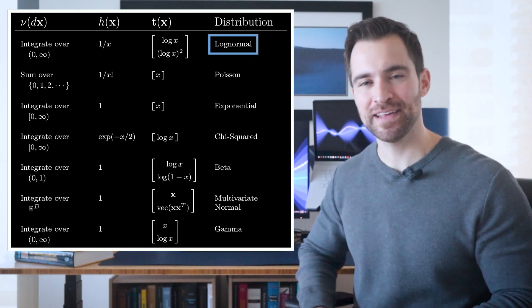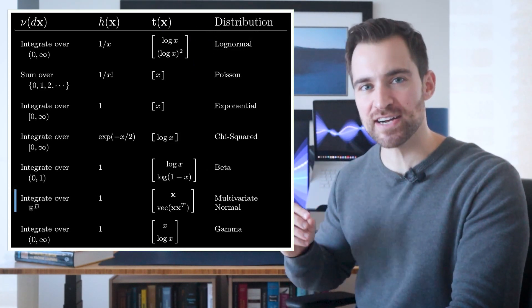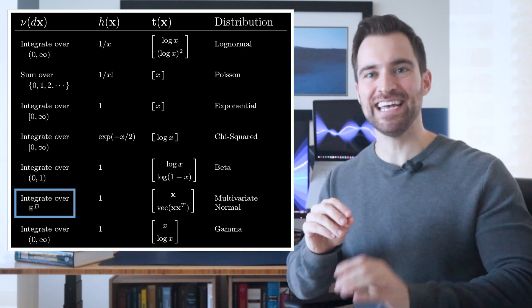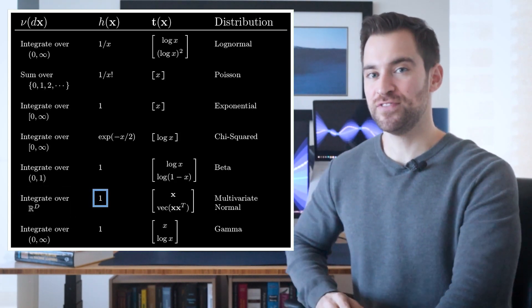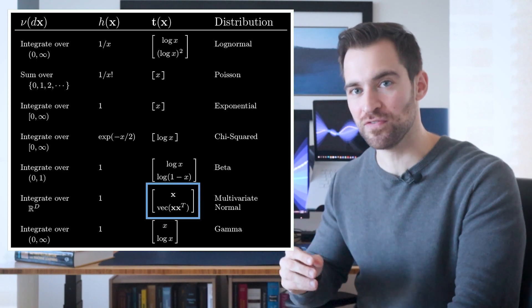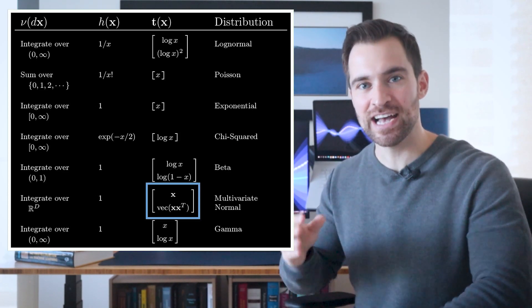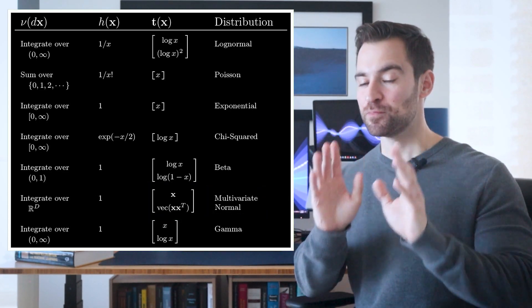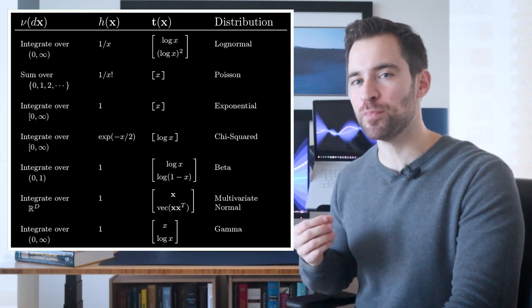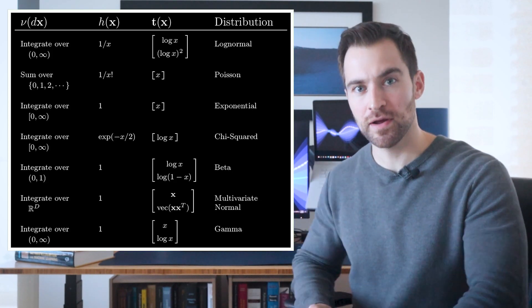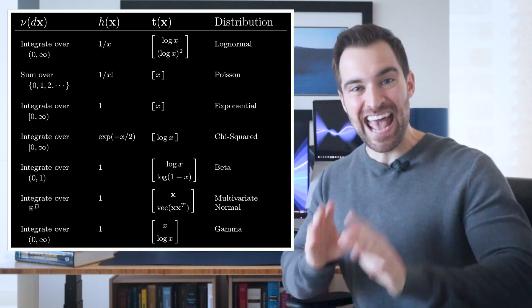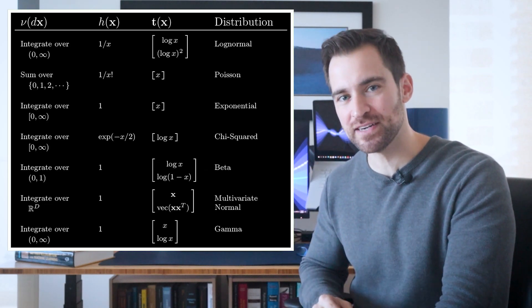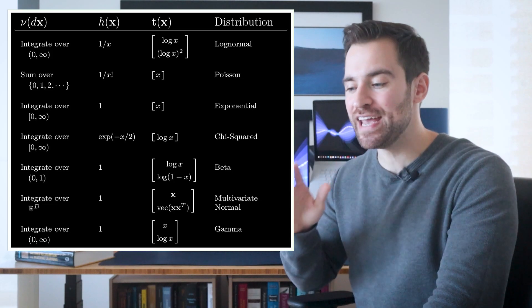Okay, let's look at a more exotic one. Let's say x is a length d vector, where each element is a real number, and it's over this space which we'll integrate. Also, let's say h of x is 1. And finally, the sufficient statistics are the x vector itself, along with the outer product of x with itself, stretched out into a long vector. Then this thing would be the multivariate normal. That's pretty flexible. I'd say something like the Bernoulli and the multivariate normal are worlds apart, but not according to the exponential family. And this list isn't even complete. There are a bunch of other distributions you can reach from this perspective.